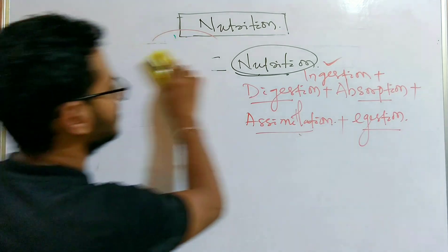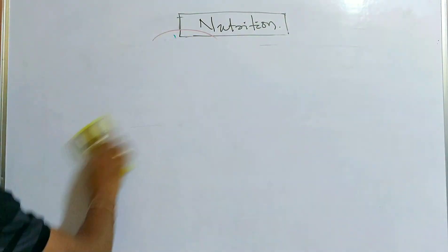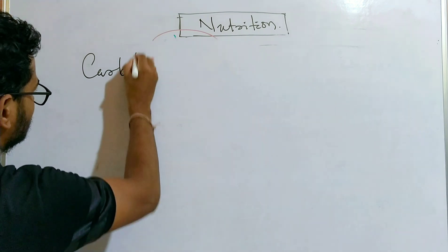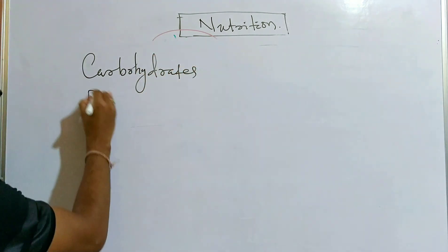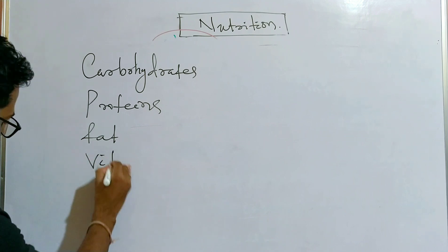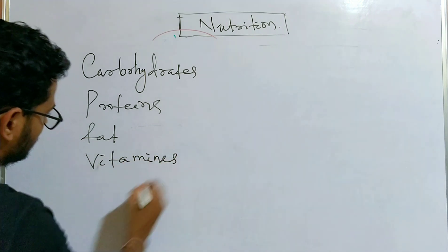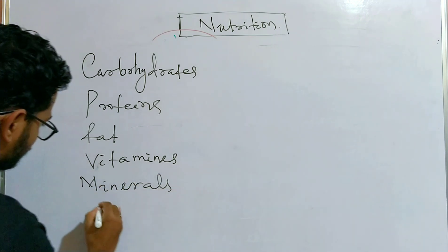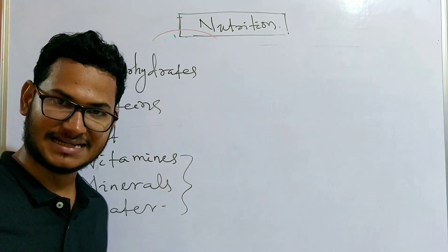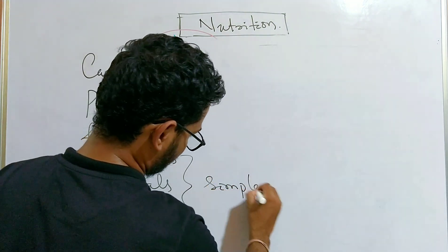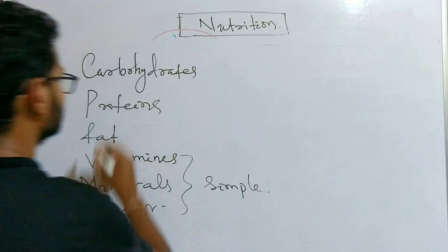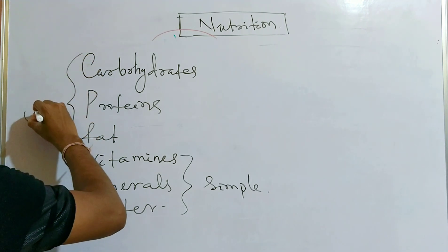There are six different types of food that we take: carbohydrates, proteins, fats, vitamins, minerals, and water. Vitamins, minerals, and water are already in simple form, but carbohydrates, proteins, and fats are in complex forms — they need to be digested.